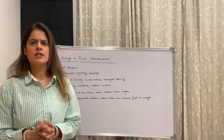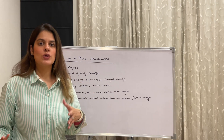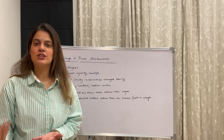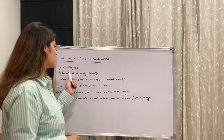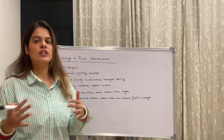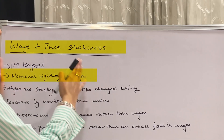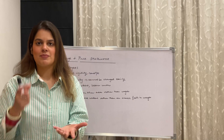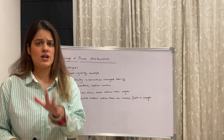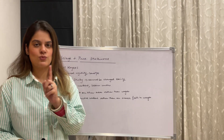Lastly, let's look at wage stickiness. Similar to price stickiness, where prices cannot change easily, we have wage stickiness. This concept was developed under the New Keynesian model. Together, price stickiness and wage stickiness are called nominal rigidity — rigid meaning something which cannot be changed easily. Wages being resistant to downward change is also commonly known as wage rigidity.